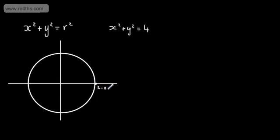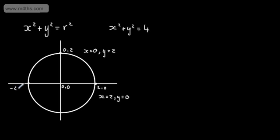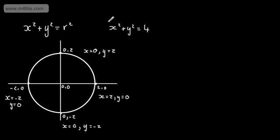Considering some points on this circle: when x equals 2, y equals 0, giving us the point (2, 0). We also have (0, 2), where x is 0 and y is 2. Then (−2, 0), where x equals minus 2 and y equals 0. And (0, −2), where x equals 0 and y equals minus 2. We can see that these four points satisfy the equation.